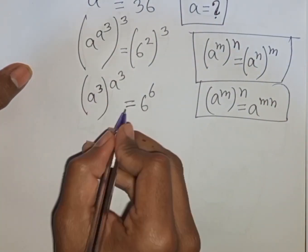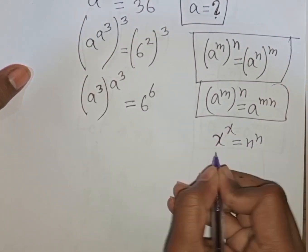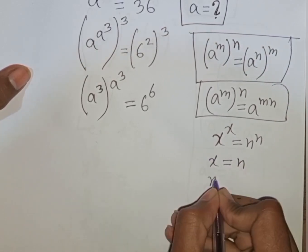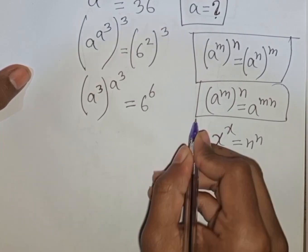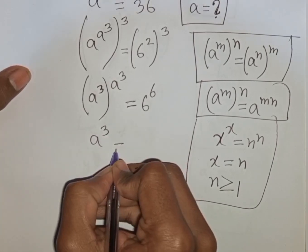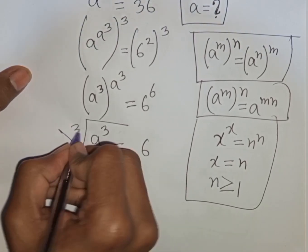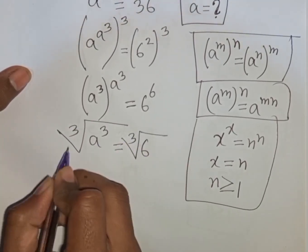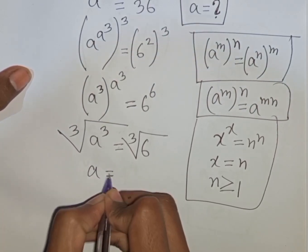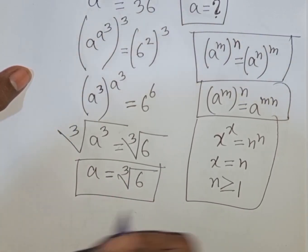Now we can write A^(A³) equal to 6. According to the rule x^x equal to N^N means x equal to N, and N is greater than or equal to 1, we can compare and get A³ equal to 6. We need the value of A, so we apply cube root on both sides. Cube root of A³ equals cube root of 6, the power 3 cancels, so A is equal to cube root of 6. This is the value of A.